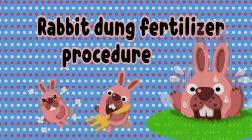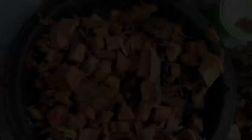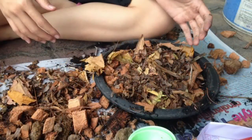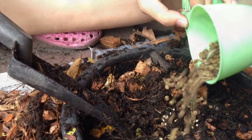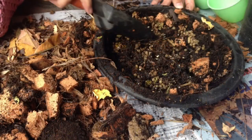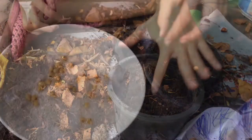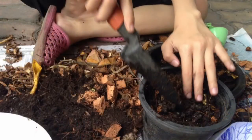Then we come to the rabbit dung fertilizer, which has procedures like cow dung but just change from cow dung to rabbit dung. At first, we have coconut spade, dry leaves, rabbit dung, and soil. Then we mix together until it will combine, like in the picture. Then you put it in the pot. Put a thick layer of soil and then put 5 soybean seeds in each pot. Then it is finished.